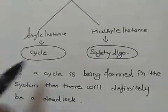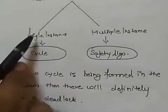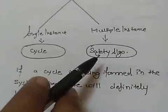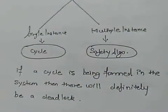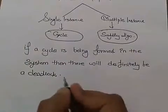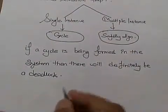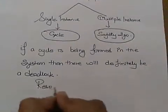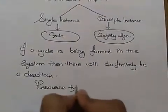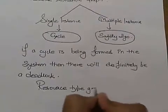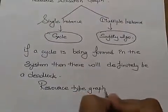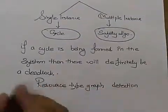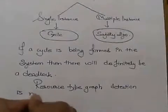We can say that if a cycle is formed in a single instance, we will get a deadlock and in multiple instances, we will provide a safety algorithm to detect the deadlock. In multiple instances, the resource type graph detection is not enough.